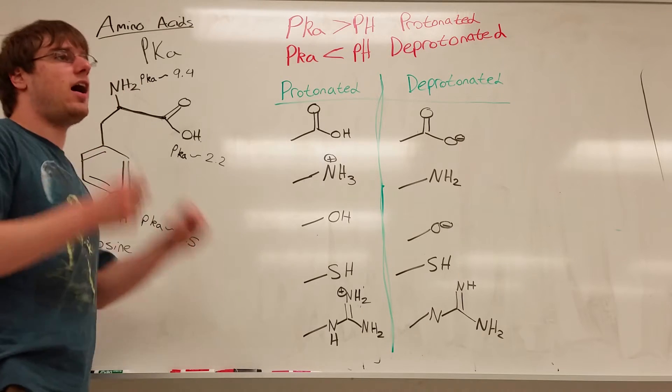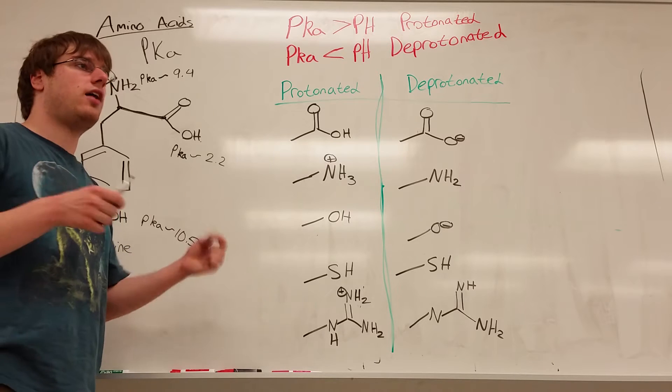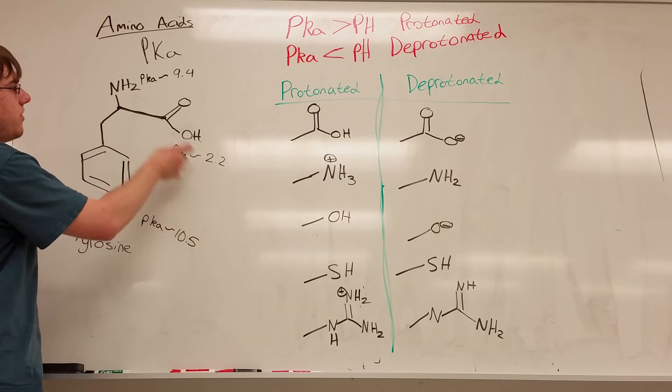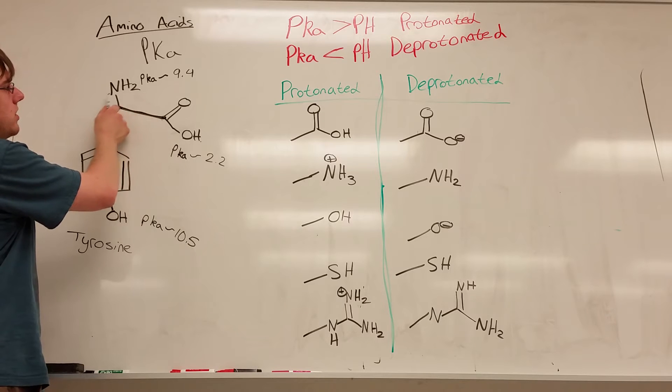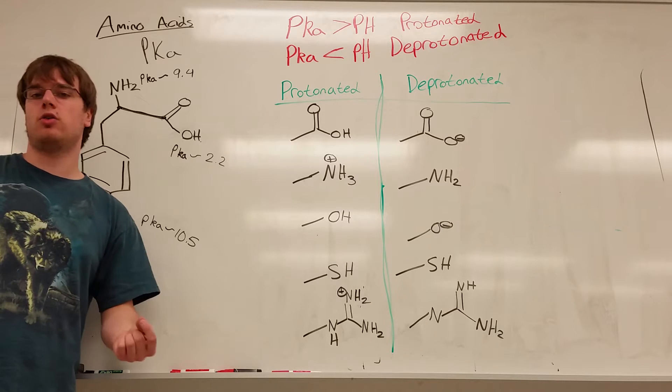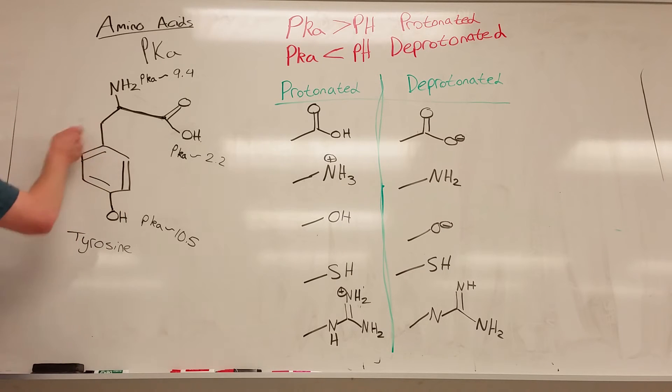The pKa of the alpha-COOH, or the alpha-carboxylic acid group, refers to this. The pKa of the alpha-amino group is this. And the pKa of either, what they'll say is the side chain or the R group, will refer to this whole thing.